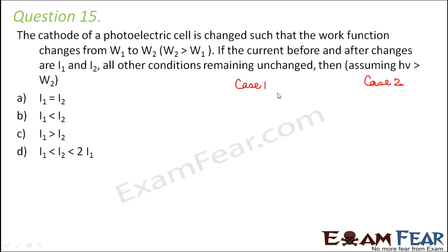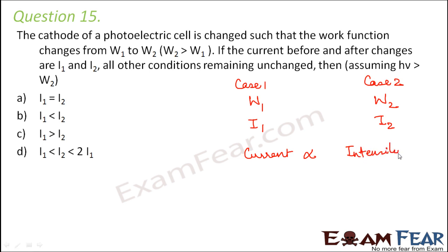We have two cases: case 1 has work function W1 and current I1; case 2 has work function W2 and current I2. Now, current is independent of the work function — the work function only decides at what point the photoelectric effect takes place, but has nothing to do with the amount of photoelectrons emitted. Current depends only on the intensity of incident light. Since intensity is unchanged, there is no change in current. So the correct answer is I1 equals I2.